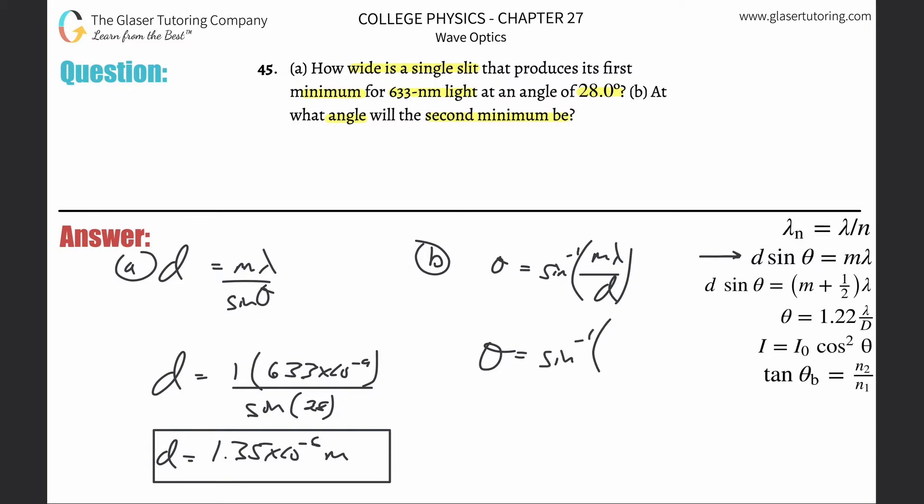So here we go. Inverse sine of the second minimum. So M is 2. The wavelength hasn't changed. That's 633 times 10 to the minus 9th meters. And divide that then by the D you just found, 1.35 times 10 to the minus 6. And let's do it.